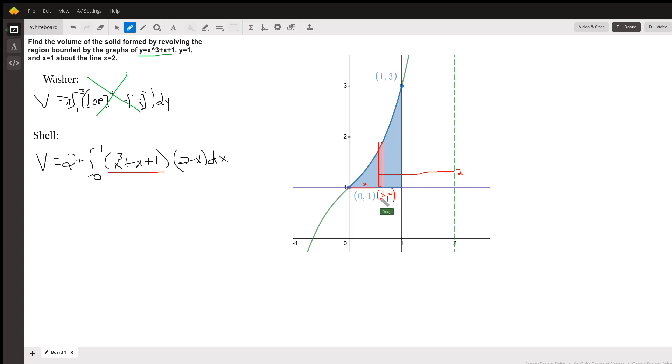The x-coordinate is x. So 2 minus x is the average radius of a typical shell.